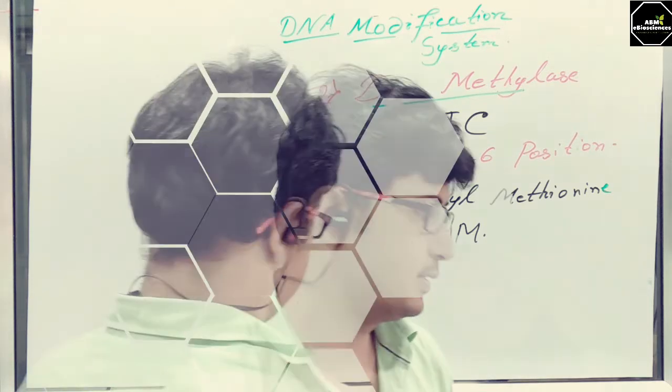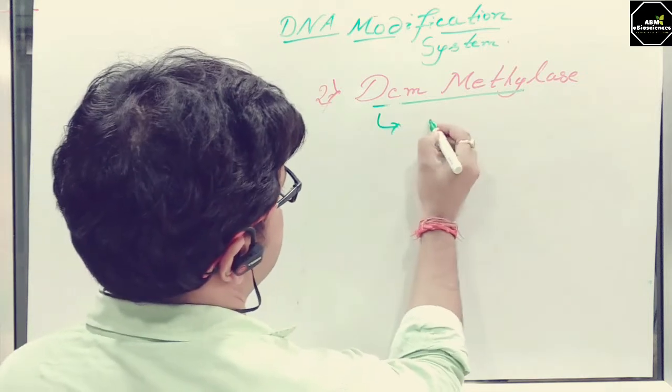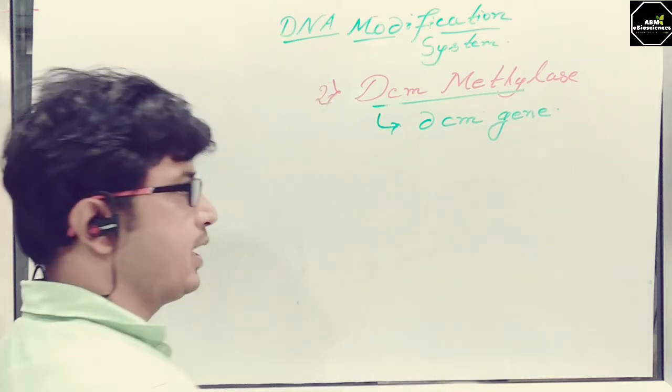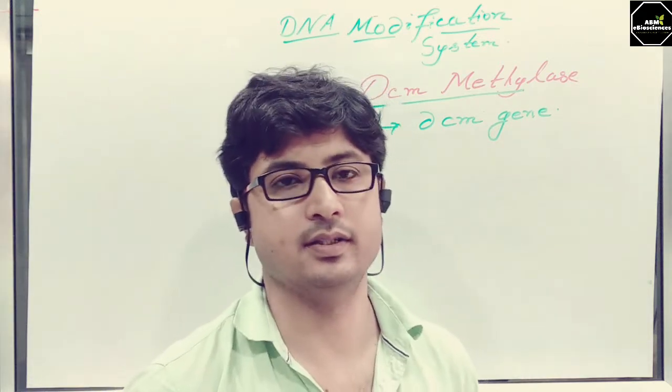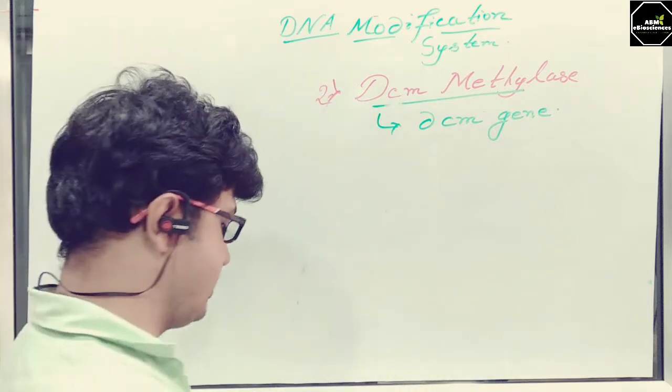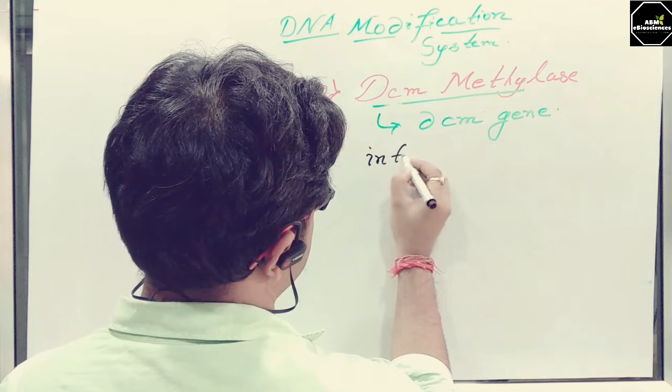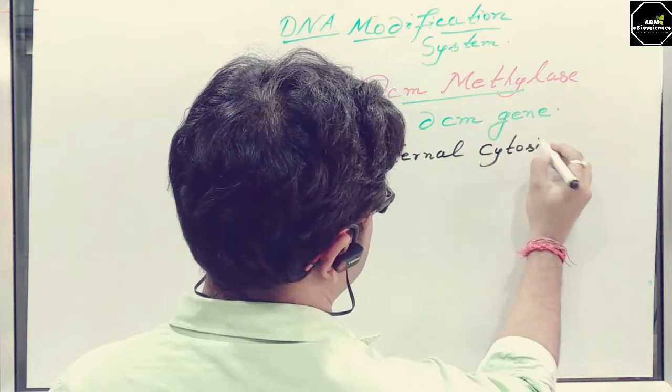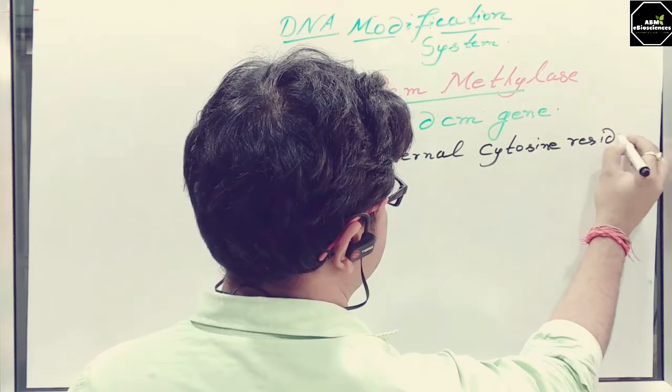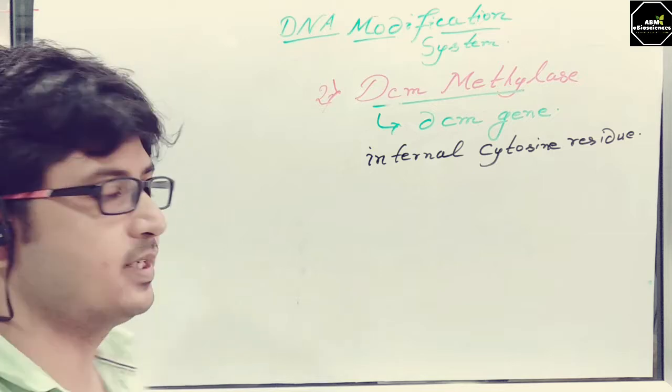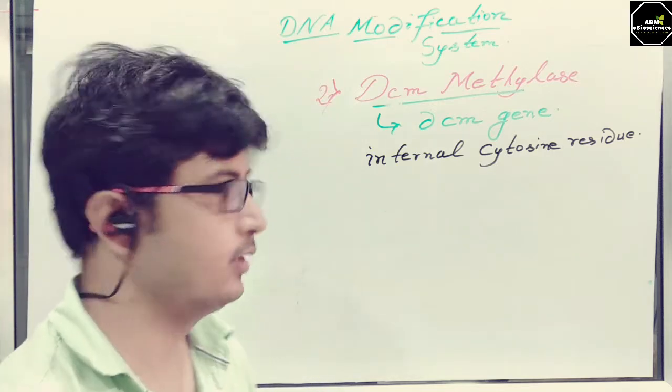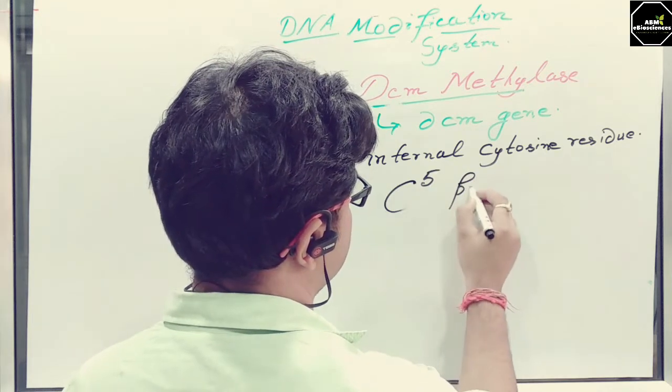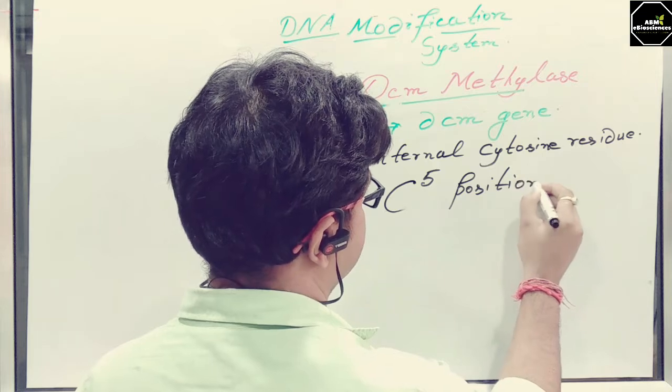Now, I will go to the second one that is DCM methylase. This is produced by DCM gene. What happens here? This enzyme methylates the internal cytosine residue in the sequence.